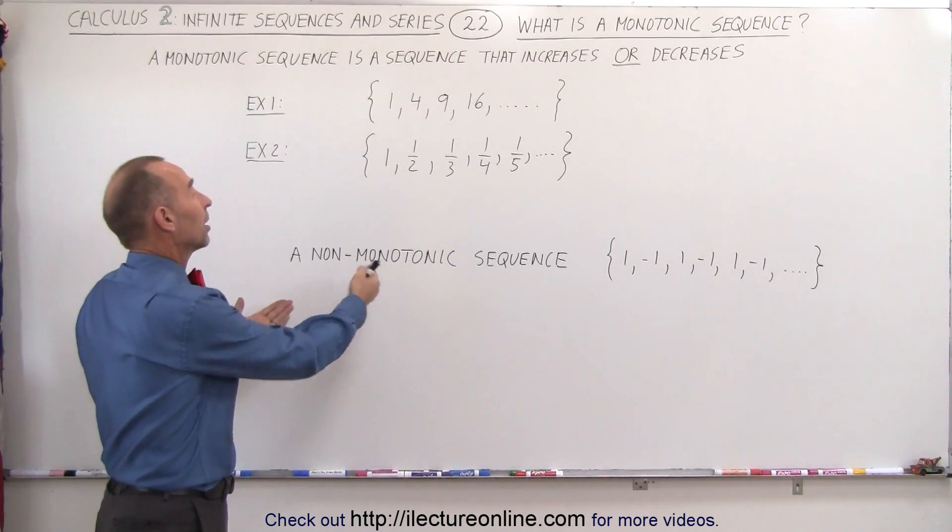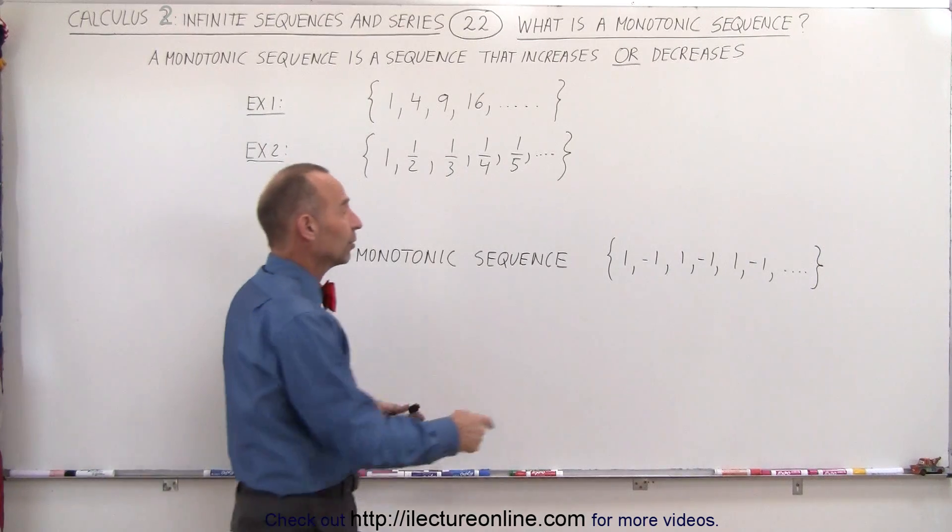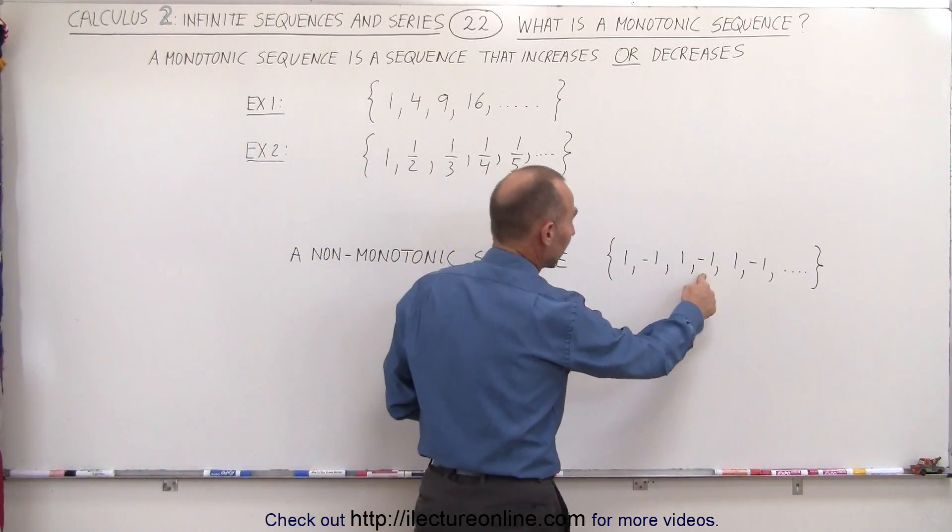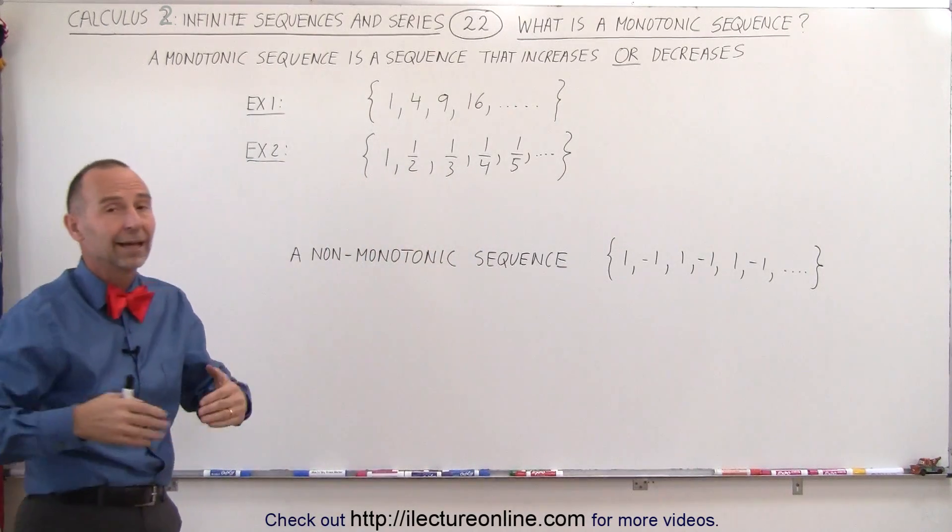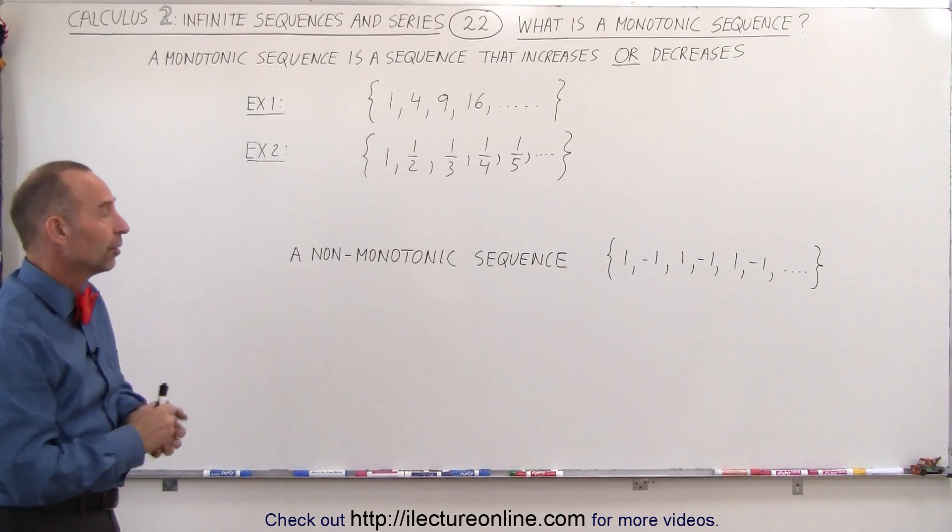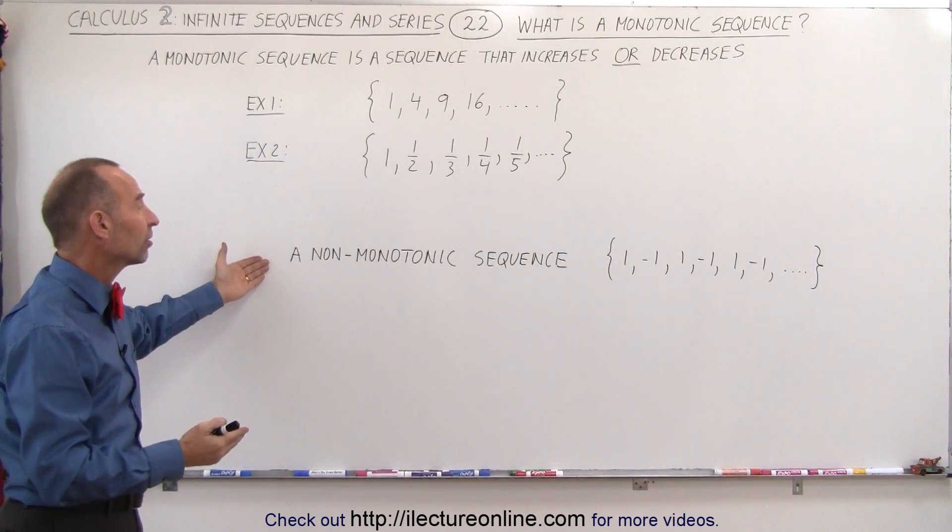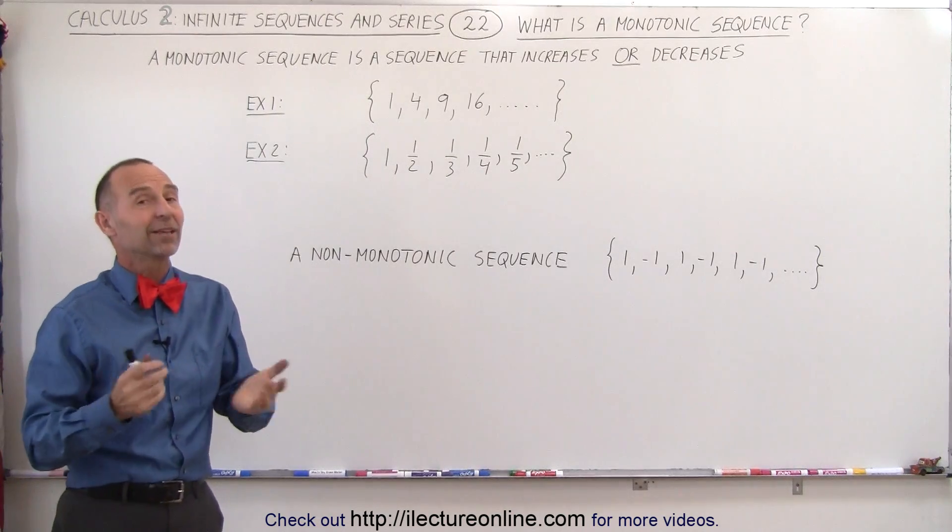An example of a non-monotonic sequence is a sequence that doesn't increase or decrease. Here it's 1, negative 1, 1, negative 1, 1, negative 1, and so forth. It keeps flipping back and forth between 1 and negative 1, and never converges or diverges to any particular value. So in this case this is a non-monotonic sequence, and these are two examples of monotonic sequences. It's as simple as that.